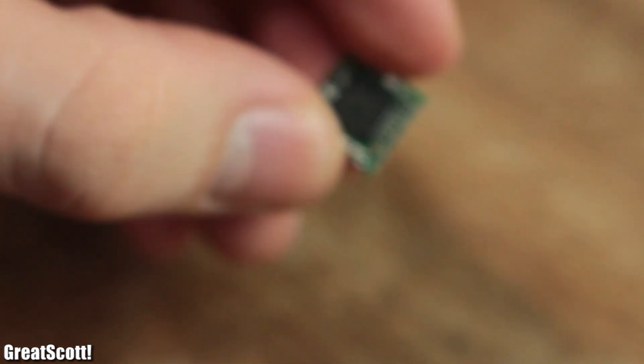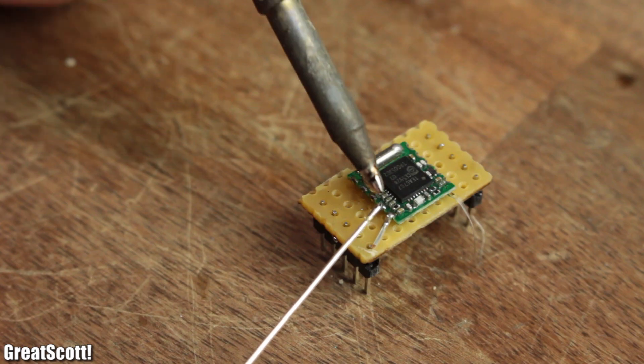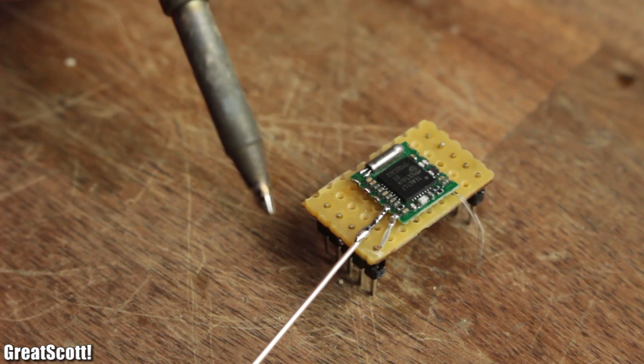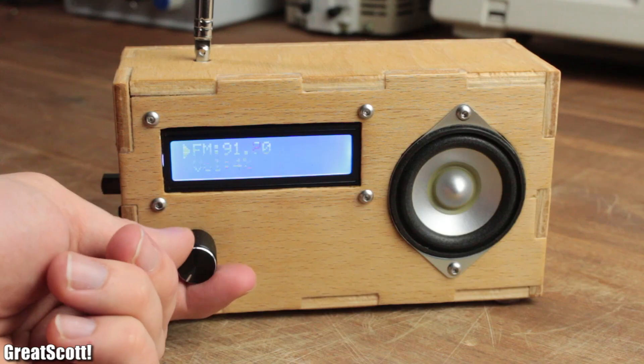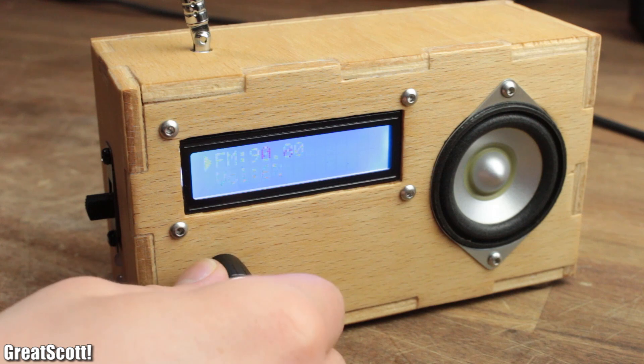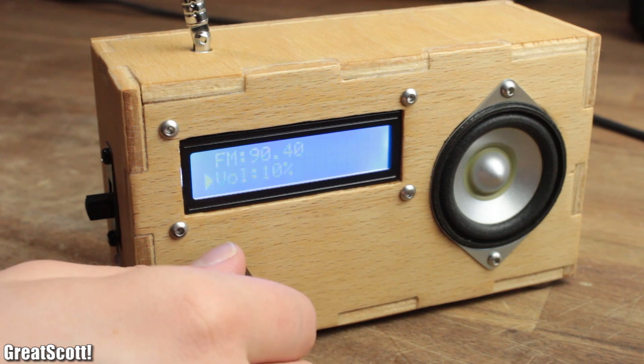So in this video let's combine a superheterodyne receiver, the TEA-5767, with a couple of complementary parts to build a rather nice looking small radio with decent audio quality.